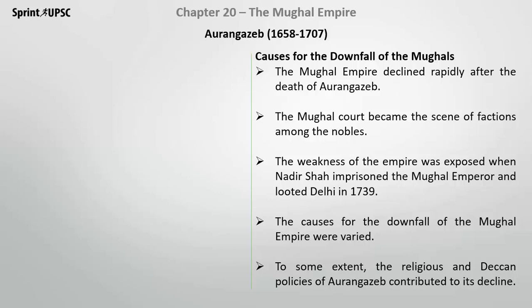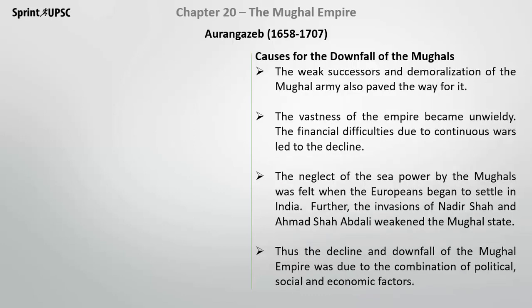So, the reasons he is considered responsible for the decline of the Mughal Empire are clear. After Aurangzeb's death, the Mughal Empire rapidly declined. The Mughal court became a scene of factions among the nobles. The weakness was fully exposed when Nadir Shah invaded and looted Delhi in 1739. The major causes of decline were Aurangzeb's Deccan policies and his religious policies.